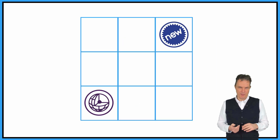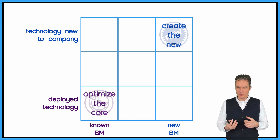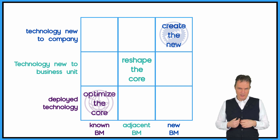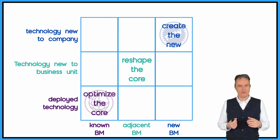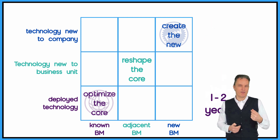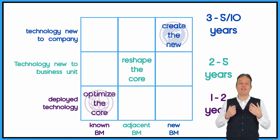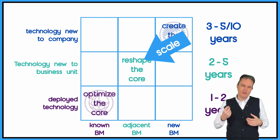If you look at the different playing fields: on the bottom left you have the core — the existing business model; on the top right you have the new stuff, creating new ventures and deploying new technologies. But the most important playing field is in the middle: reshaping the core. These involve technologies new to a business unit and business models adjacent to the current one. Developing the core takes one to two years, reshaping the core two to five years, and creating new business models five to ten years.